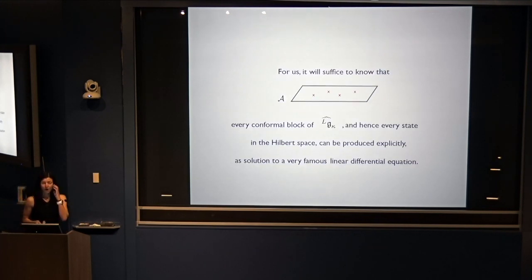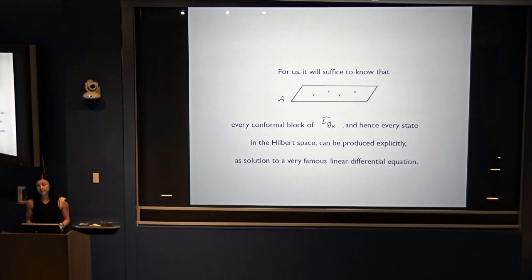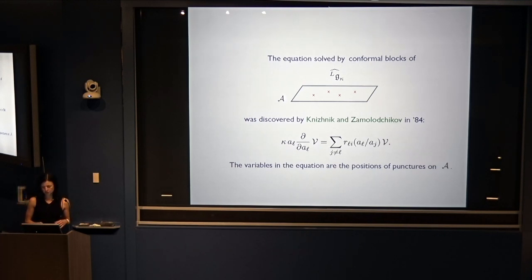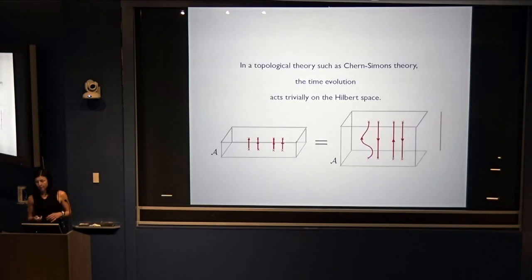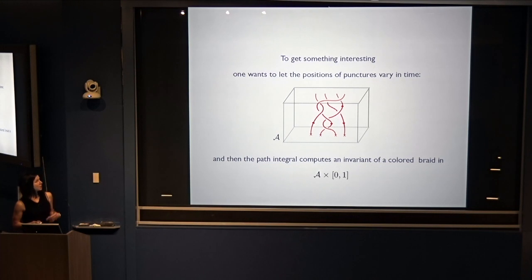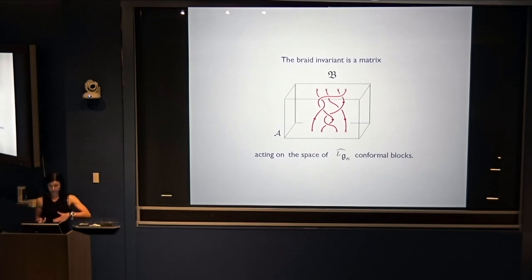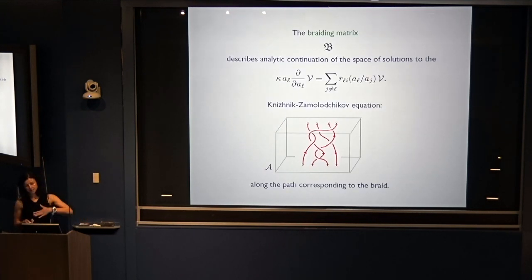Conformal blocks of the affine Lie algebra on a Riemann surface come from two-dimensional conformal field theory with affine Lie algebra symmetry. Every conformal block can be produced explicitly as a solution to a very famous linear differential equation — the KZ equation, discovered by Knizhnik and Zamolodchikov in 1984 in the course of studying conformal field theory. Its variables are positions of punctures on the Riemann surface. In a topological theory such as Chern-Simons, time evolution acts trivially. To get something interesting, you let positions of punctures vary with time, and then the path integral computes an invariant of the colored braid. The braid invariant is a matrix acting on the space of conformal blocks, describing analytic continuation of solutions to the KZ equation along the path corresponding to the braid.